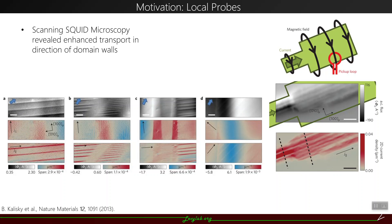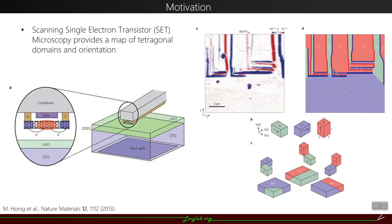Similar motivation using local probes comes from scanning single electron transistor, or scanning SET microscopy, which provided a map of tetragonal domains and the orientation. You can see that inside of the domain there's very little transport. However, at the border between two domains, or the domain wall, there is a large amount of transport. So we now know that the transport basically happens at these domain walls.